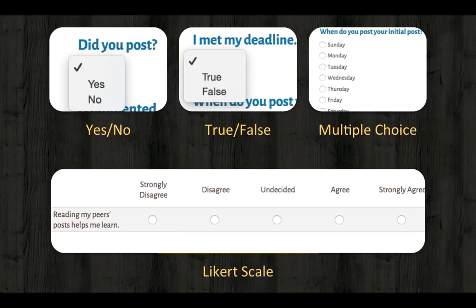There are four major types of close-ended questions. One type is yes or no — this type simply asks the respondent a yes or no question, such as "Did you post?" The next type, a true-false question, is very similar to the yes or no question. In a true-false question, the researcher asks the respondent to select true or false in relation to a statement, such as "I met my deadline."